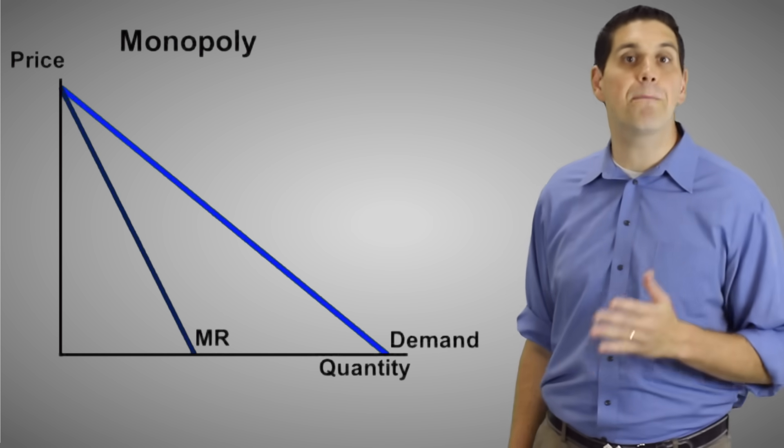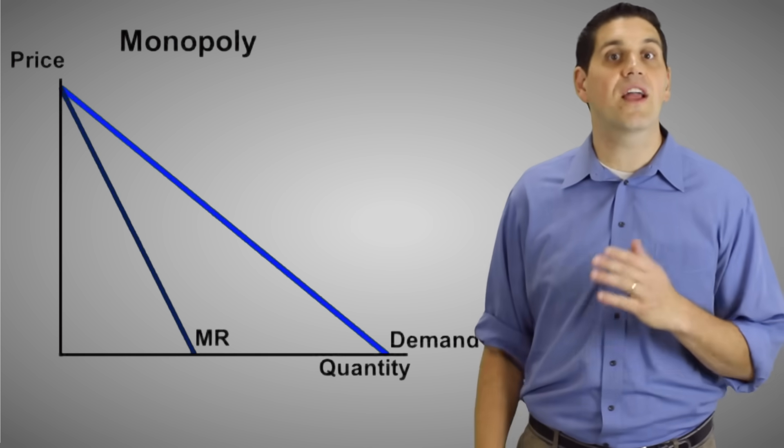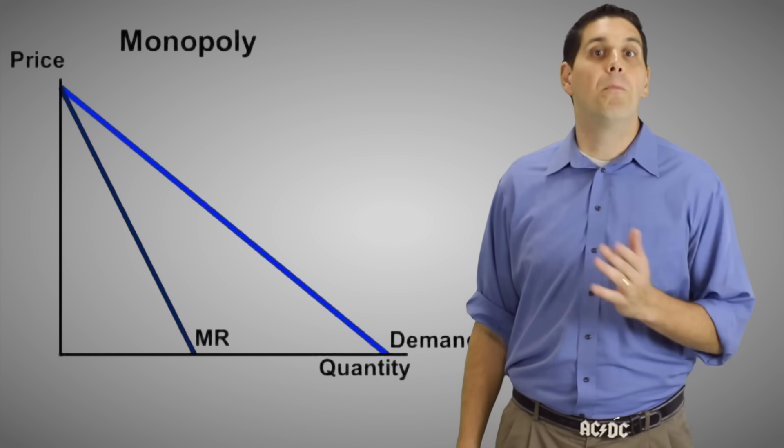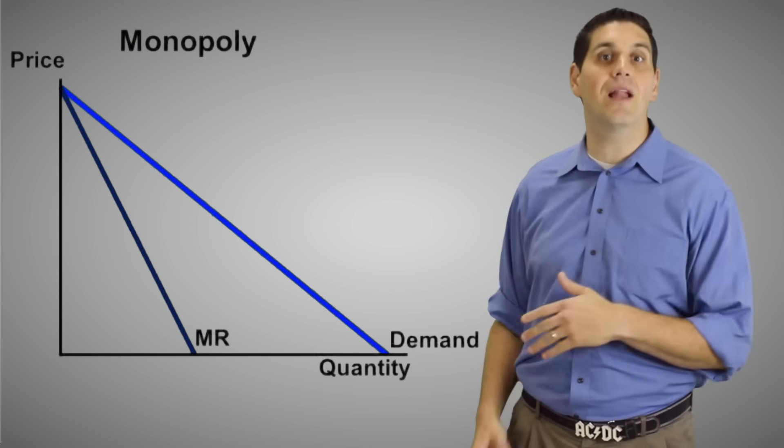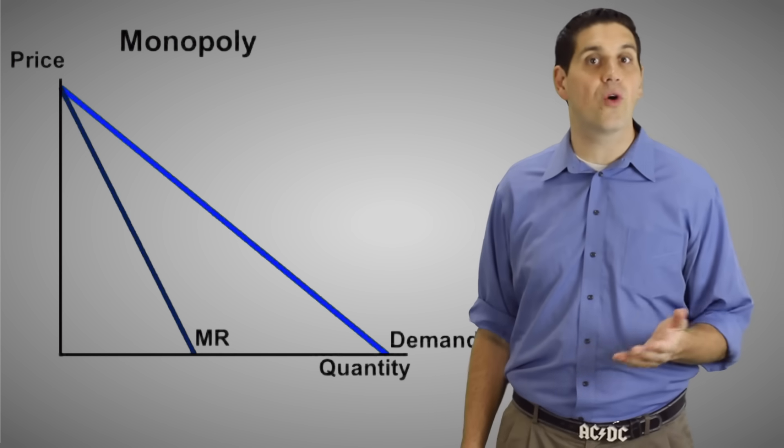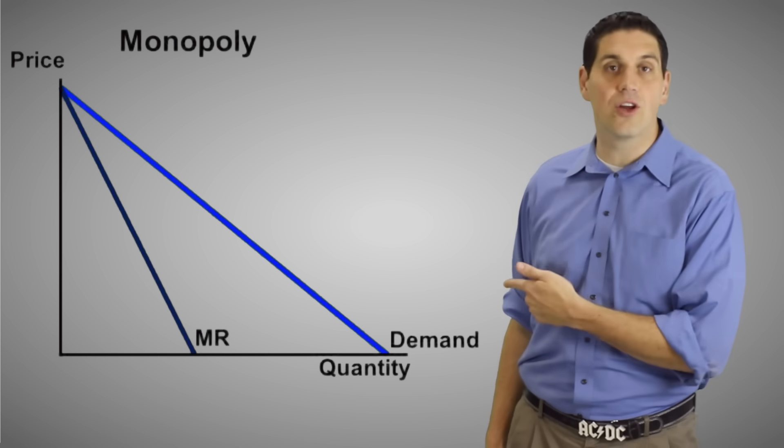But a monopoly can't price discriminate. So to sell another unit, they got to lower the price of the previous unit they could have sold for a higher price. So if a monopoly decides to charge $100, that's fine. But if they lower the price down to $90, they got to lower the price down to $90 for everybody. So they lose some money on the units they could have sold for $100. The point is the marginal revenue is less than the demand curve.